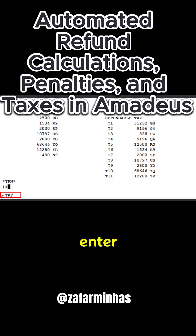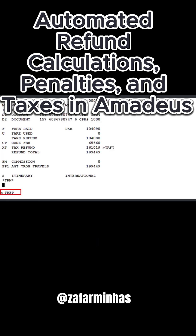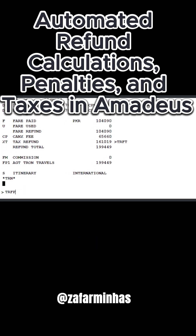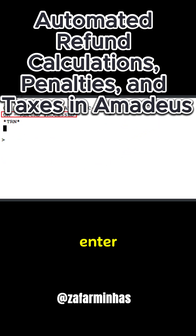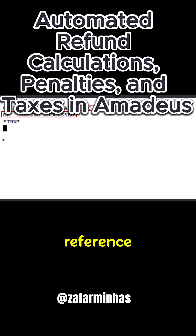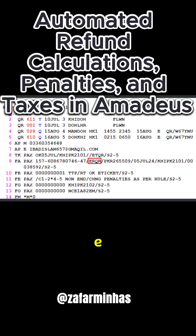Type the TRF transaction to switch from the taxes panel back to the main refund record and press Enter. You will now be back at the refund record. Use the TRFP transaction to process the refund and press Enter. You will receive a refund process message along with the airline ASAC reference. It's advisable to check the coupon status and query the sales report for the refunded e-ticket.